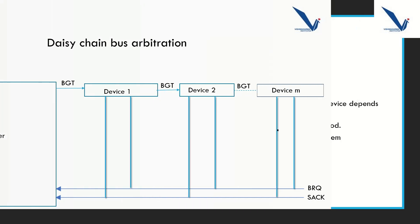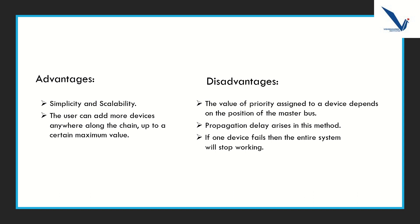There are some advantages of the daisy chaining method. First, simplicity and scalability. Second, the user can add more devices anywhere along the chain up to a certain maximum value. Disadvantages of the daisy chaining method: the priority assigned to a device depends on its position in the chain. Propagation delay arises in this method. And if one device fails, then the entire system will stop working.